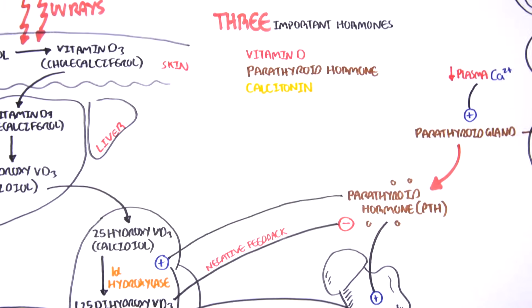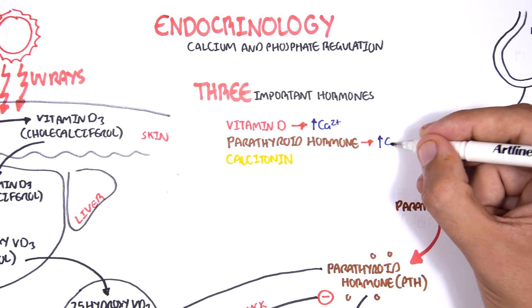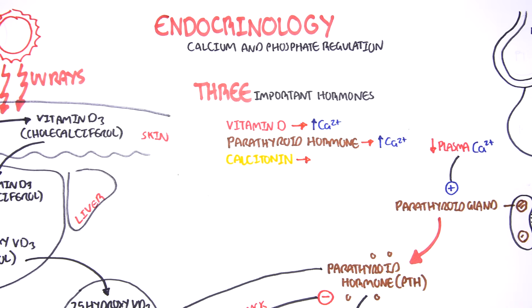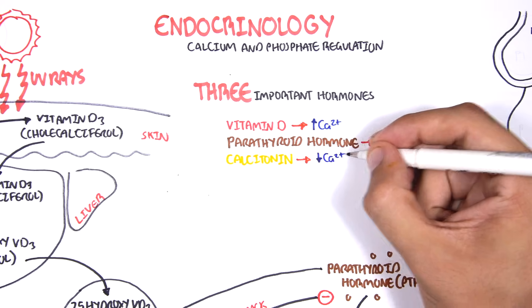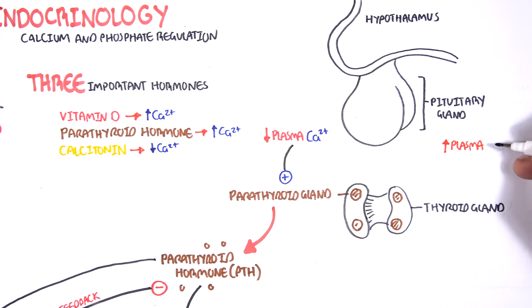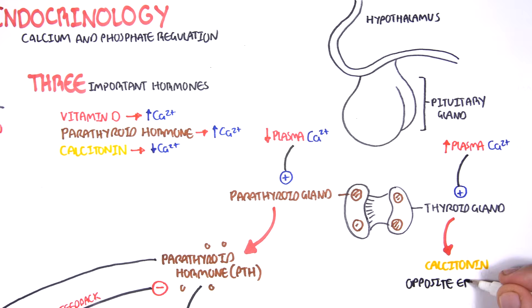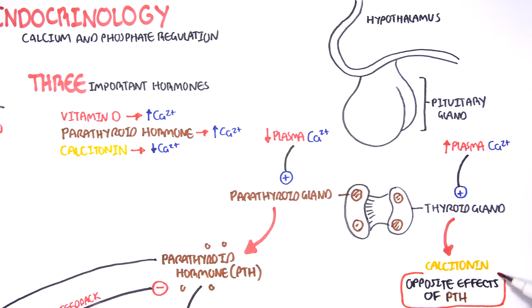Looking back at the three important hormones: vitamin D's main goal is to increase plasma calcium levels; parathyroid hormone's main goal is also to increase plasma calcium levels; whereas calcitonin does the opposite — it aims to decrease plasma calcium levels. An increase in plasma calcium stimulates the thyroid gland to produce calcitonin, which has the opposite effect of parathyroid hormone. However, calcitonin does not have as significant a role in the human body as parathyroid hormone.